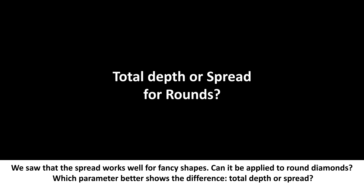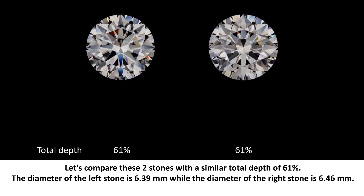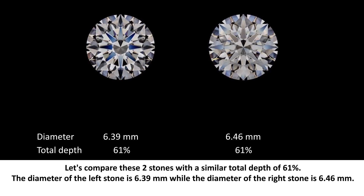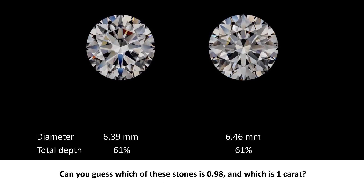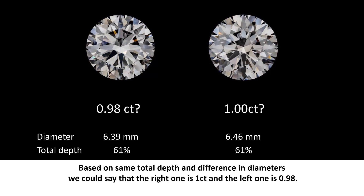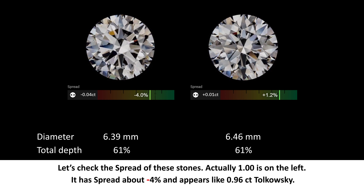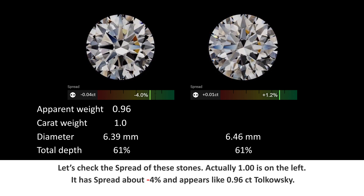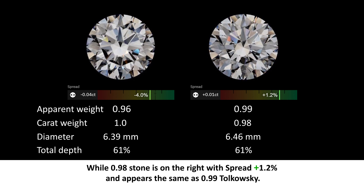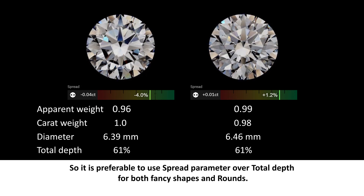We saw that spread works well for fancy shapes — but can it be applied to round diamonds? Which parameter better shows the difference: total depth or spread? Let's compare two stones with a similar total depth of 61 percent. The diameter of the left stone is 6.39 mm while the diameter of the right stone is 6.46 mm. The actual 1 carat diamond is on the left — it has a spread of about minus 4 percent and appears like a 96 point Tolkowski. The 98 point stone is on the right with a spread of plus 1.2 percent, appearing the same as a 99 point Tolkowski. So it is preferable to use the spread parameter over total depth for both fancy shapes and rounds.